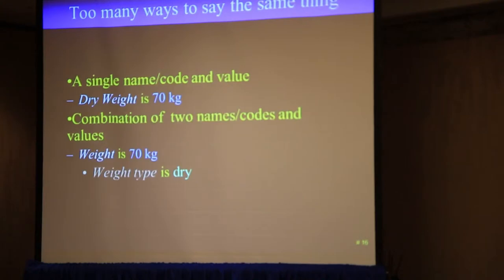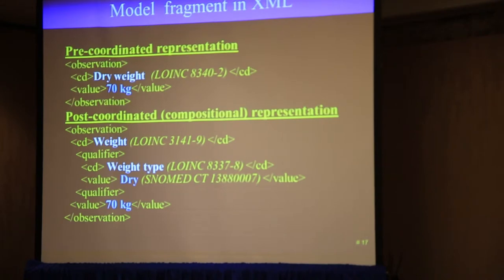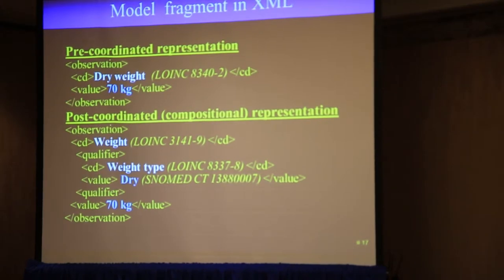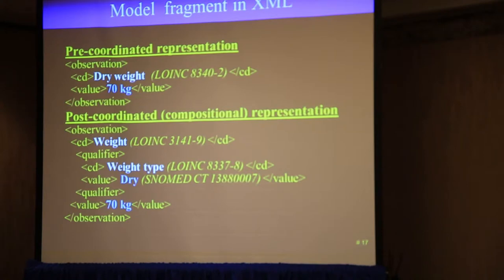If you represent that information more formally, basically you're saying dry weight is 70 kilograms, where the other one is saying weight is 70 kilograms — oh, by the way, this particular weight type is a dry weight. You can put it into a data representation using XML with real LOINC codes and real SNOMED codes interspersed in the data, because LOINC has a code for dry weight, a code for plain old weight, and a code for weight type. It makes no decision for the clinical user about whether you should use the pre-coordinated or the post-coordinated representation. These are two models that have exactly the same information content, but it's represented in different ways.